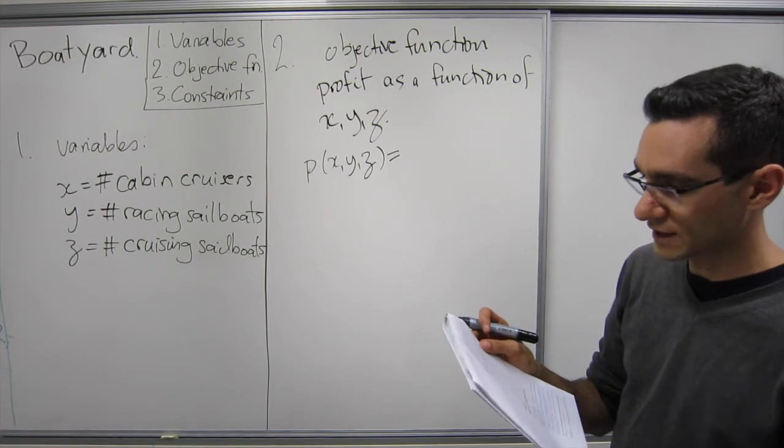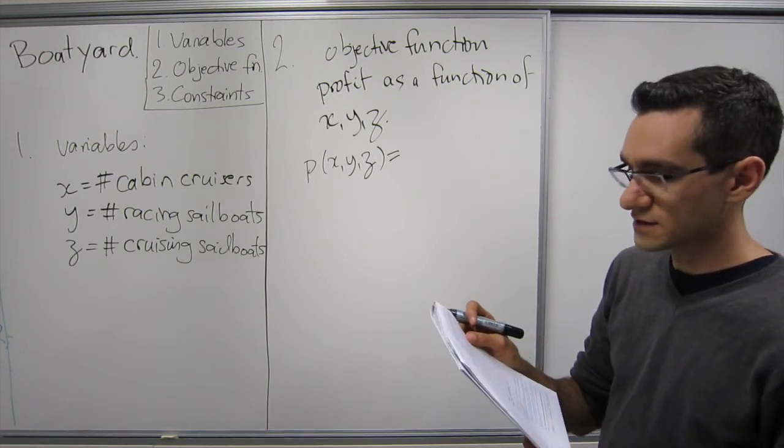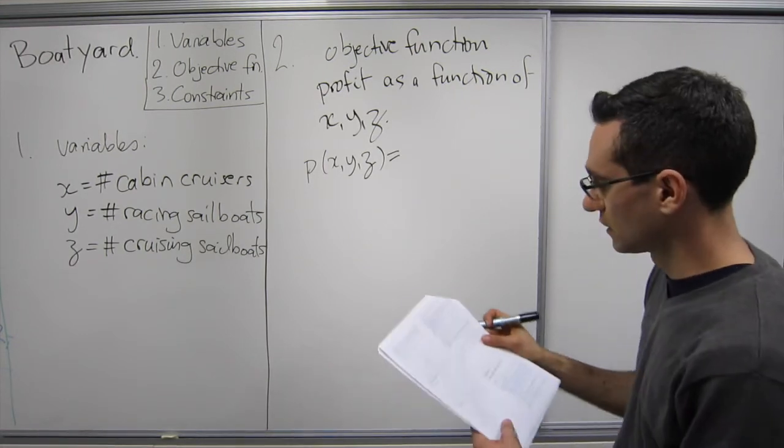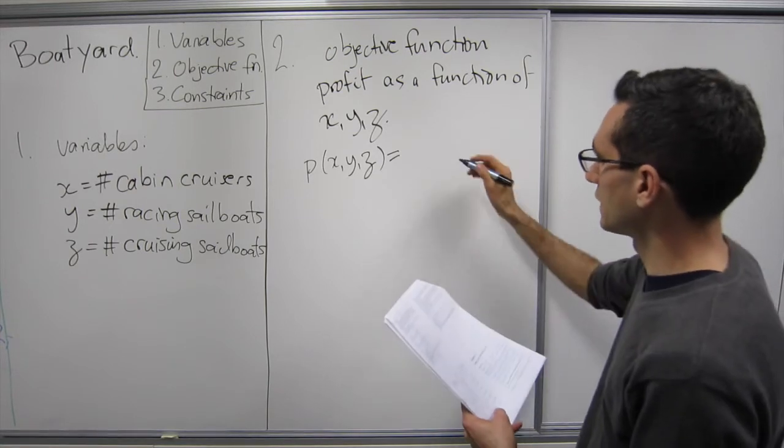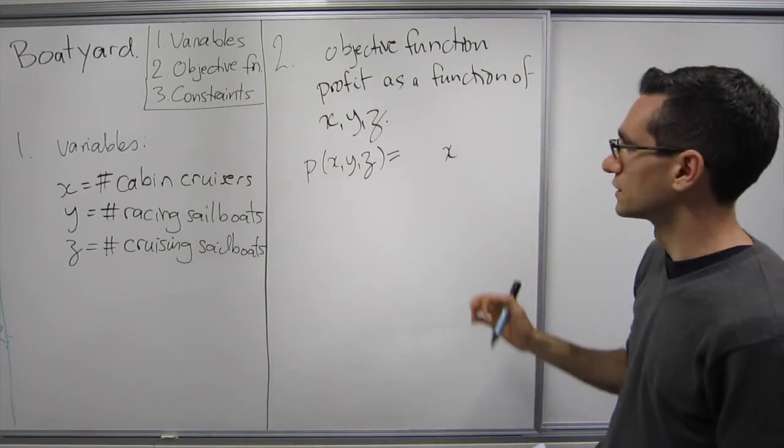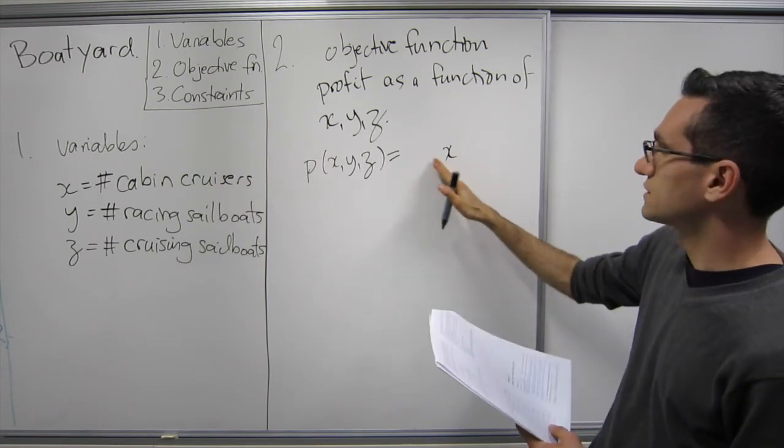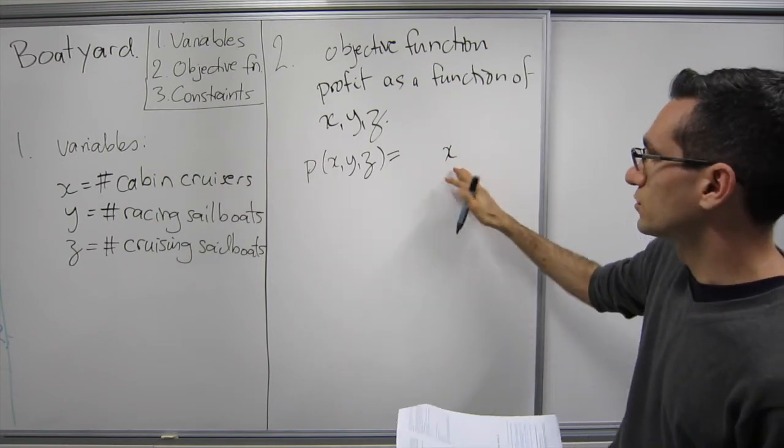4,000 for each racing sailboat, and 6,000 for each cruising sailboat. So we could write it as per cabin cruiser we've got $5,000 profit, but that takes up a lot of space.